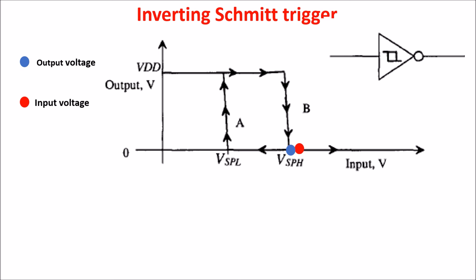If we keep increasing the input voltage the output remains at zero, and if we go back below VSPH the output still remains at zero until we decrease the input voltage to VSPL. In this case the output switches from low to high in a very sharp way — this is the low switching point. If we keep decreasing the input voltage the output remains high. The difference between VSPH and VSPL is called hysteresis, which is what sets the Schmitt Trigger apart from the basic inverter.